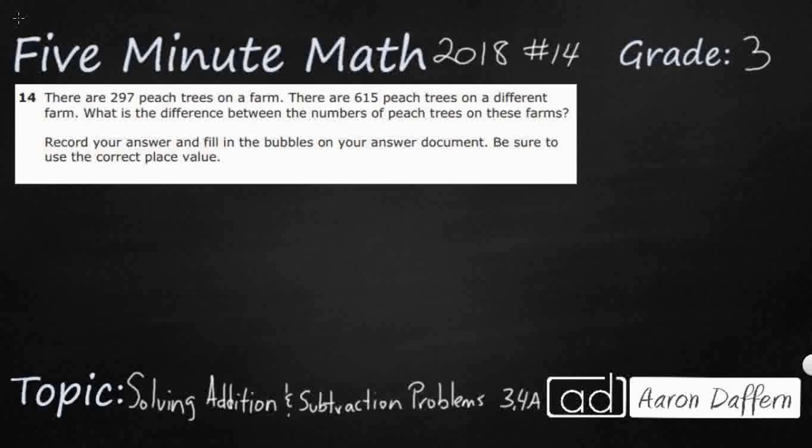So we have a word problem here and no answers to choose from. This is what we call a griddable item because they want you to fill in the bubbles in your answer document. The problem is right up here. There are 297 peach trees on a farm and there are 615 peach trees on a different farm. What is the difference between the numbers of peach trees on these farms?